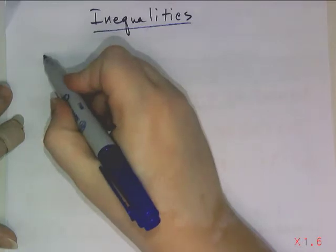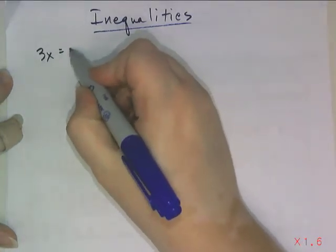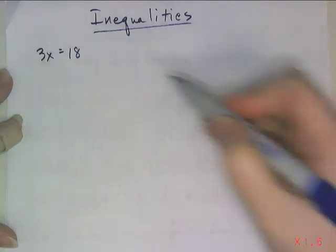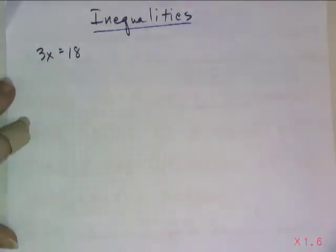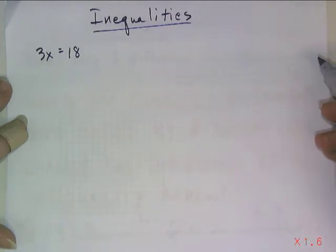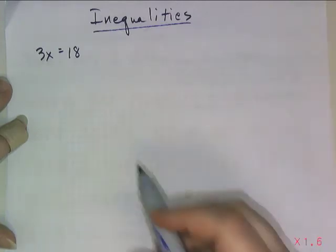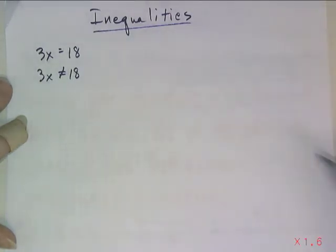An equation might say something like 3x is equal to 18 — two equal quantities, two equal values. An inequality, however, is a comparison statement between two unequal amounts. So I might say something as simple as 3x does not equal 18. That's an inequality statement.